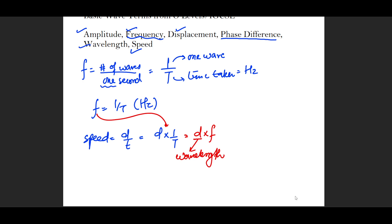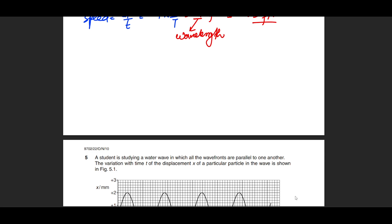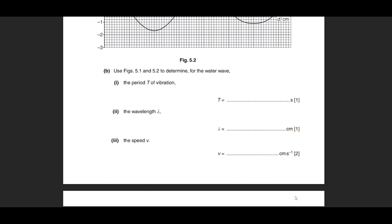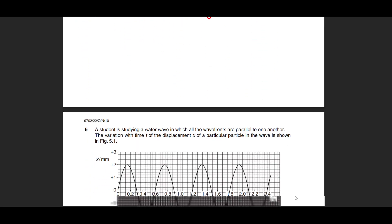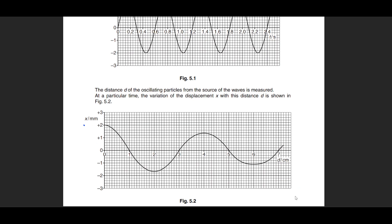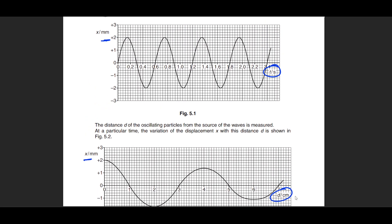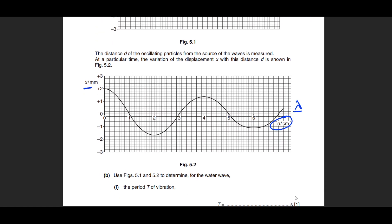We've derived v = fλ for waves. Now let's discuss phase difference — a tricky topic. First, a single particle's motion can be represented as the movement of a unit circle. Let's solve a question first, then move to phase difference. The question gives a wave with amplitude 2, with one axis representing time and the other distance.